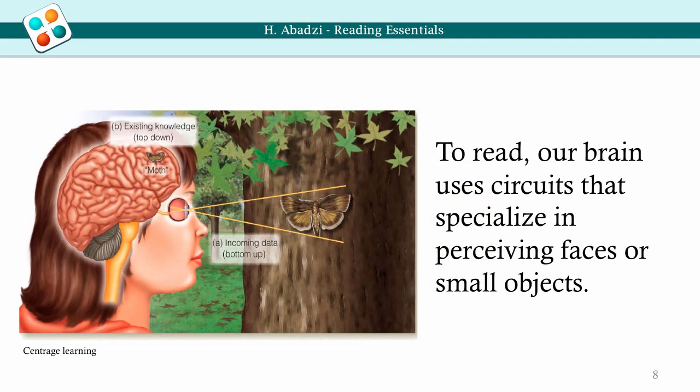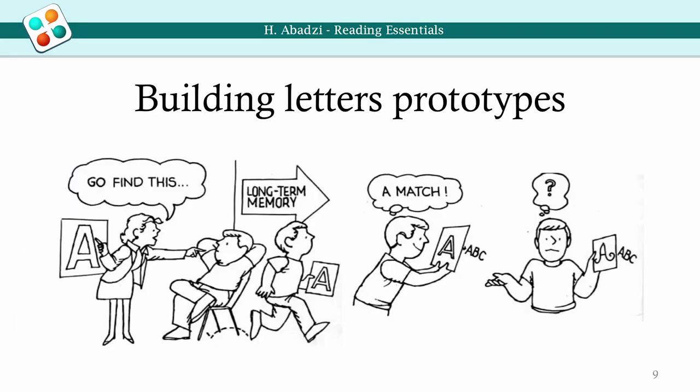To see something, we must first pay attention to it. Images initially enter a sensory register that can keep them for two to three seconds. The image passes into the optical part of the brain that contains receptors — specialized cells that detect individual features, lines of different angles, or curvatures. The receptors need to see shapes they can recognize. To read, our brain uses circuits that specialize in perceiving faces or small objects.